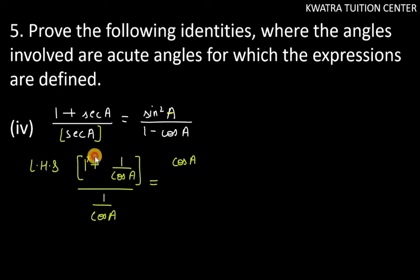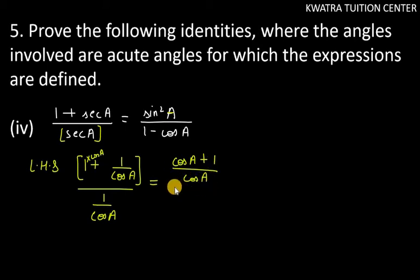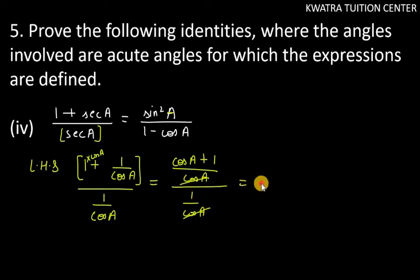So 1 ko hame cos a se multiply karna paas hai. So numerator becomes cos a plus 1 over cos a, over 1 over cos a. Cos a, cos a cancel ho gya. Aapka answer aya cos a plus 1.